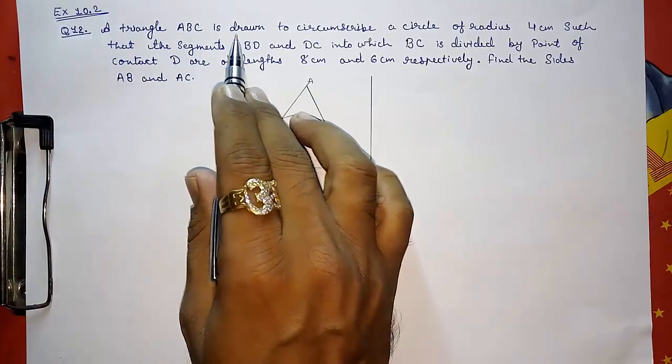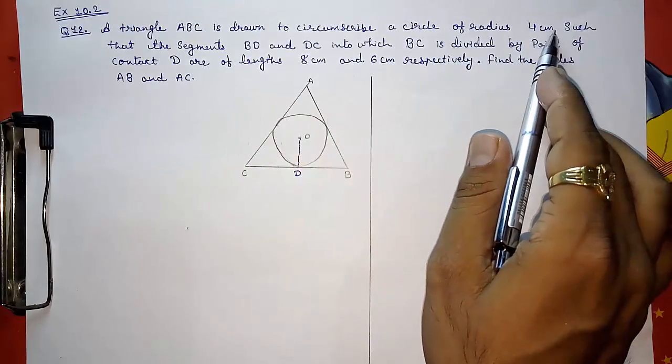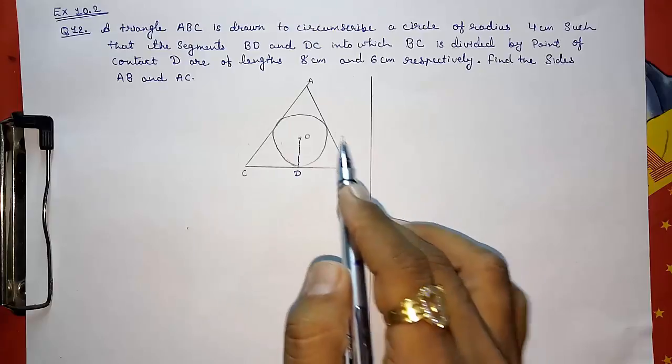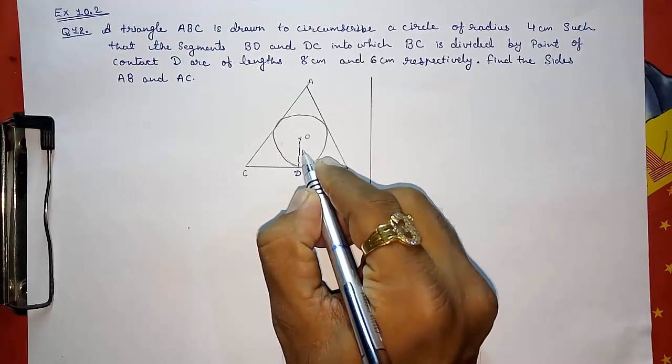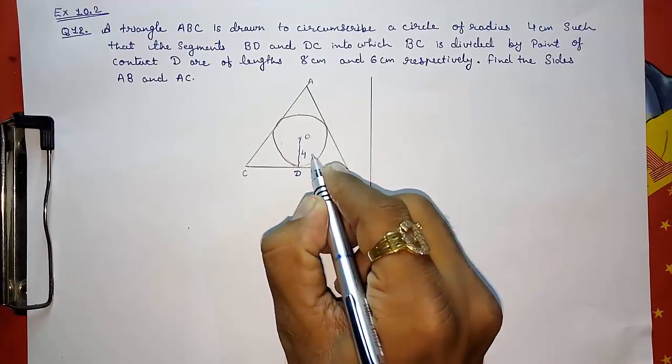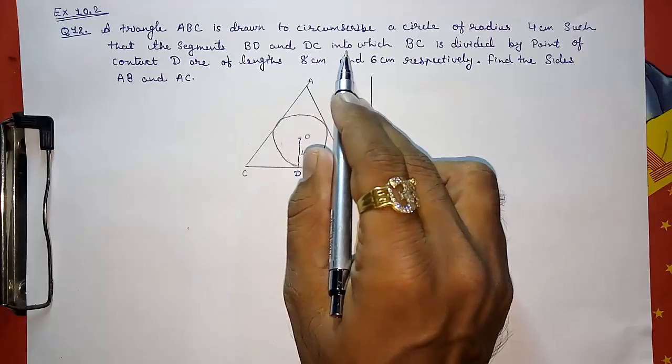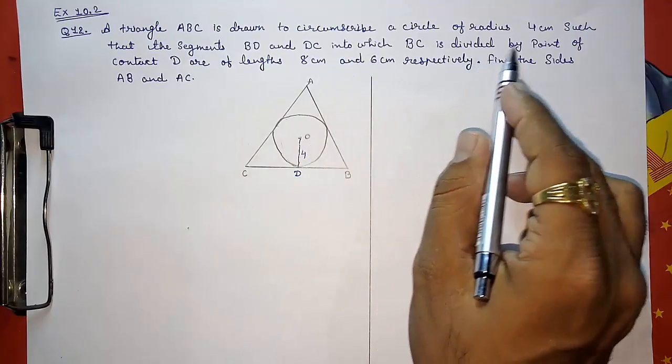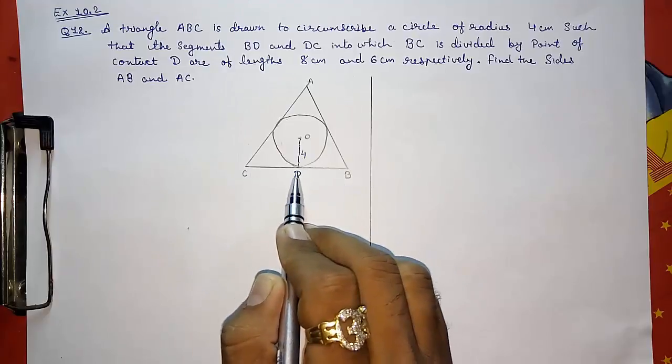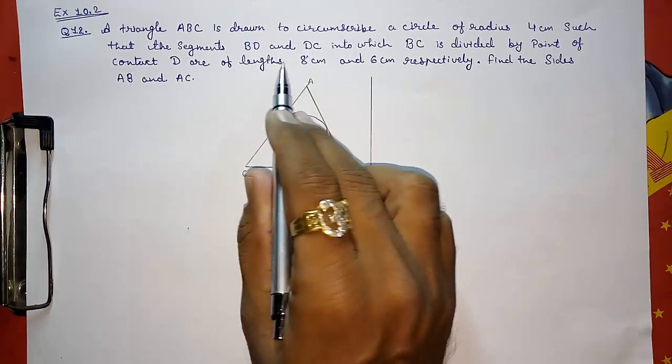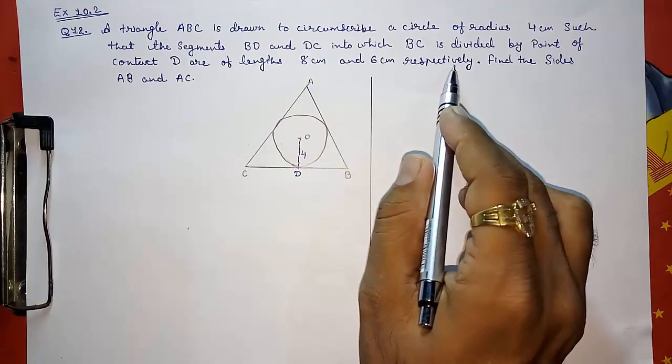A triangle ABC is drawn to circumscribe a circle of radius 4 cm. Look here, a triangle circumscribing a circle with radius 4 cm. So this is 4 cm. Such that the segments BD and DC, into which BC is divided by the point of contact D, are of length 8 cm and 6 cm respectively.